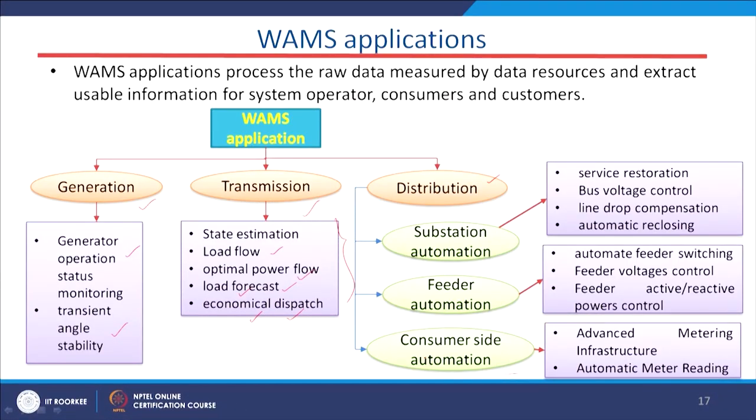Coming to the distribution part, we have substation automation, feeder automation, and customer-side automation. The distribution part is the customer's end where utilization of power takes place. More interaction occurs at the customer side, and that is why the smart grid aims to make the distribution system smarter. There is great scope to apply WORMS technology for the distribution side.